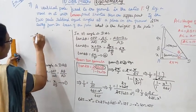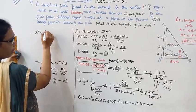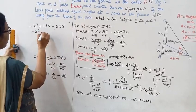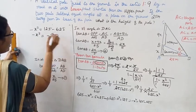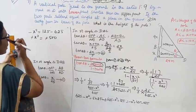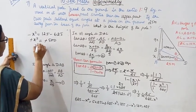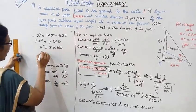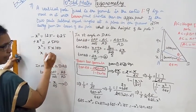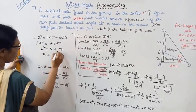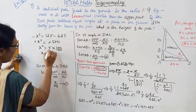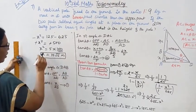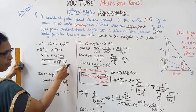Minus x squared equals minus 500. Cancelling the negatives, x squared equals 500 equals 5 into 100. Taking the square root, x equals plus or minus 10 root 5. Since x is a length, x equals 10 root 5 meters.